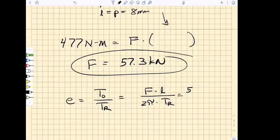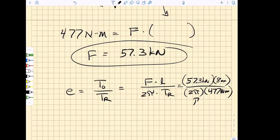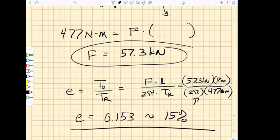We already know what the raising torque is. We know that the force is 57.3 kilonewtons. Being careful with our units here, we have that the lead is 8 millimeters divided by 2π, and our raising torque is 477 newton-meters. If we're careful with our units, we find that the efficiency of this particular system is 0.153, or roughly 15 percent—not all that efficient.